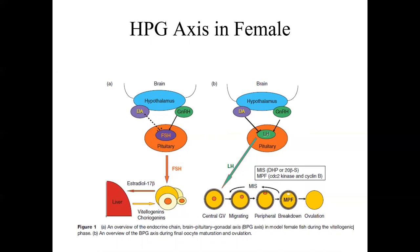Both the HPG axis in males and females works through a feedback control mechanism. With the involvement of hypothalamus, pituitary, and gonadal hormones, the process of maturation is completed in male and female fish.